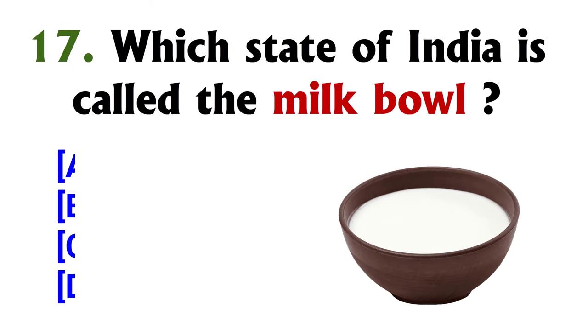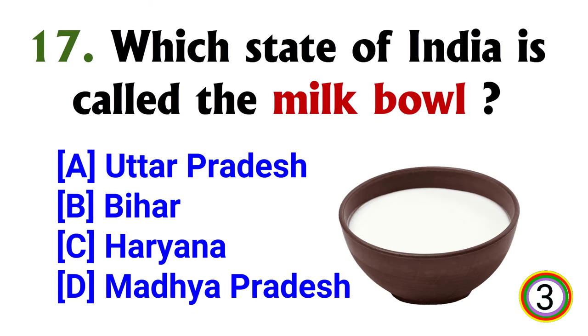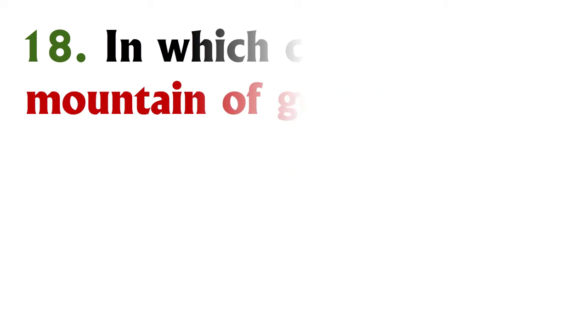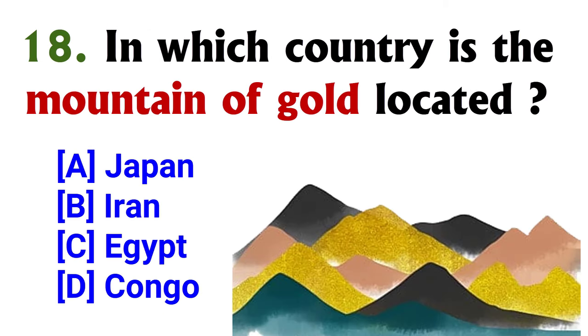Which state of India is called the milk bowl? Option C, Haryana. In which country is the mountain of gold located? Option D, Congo.